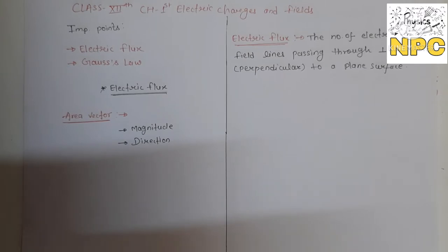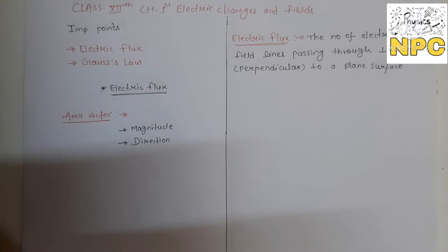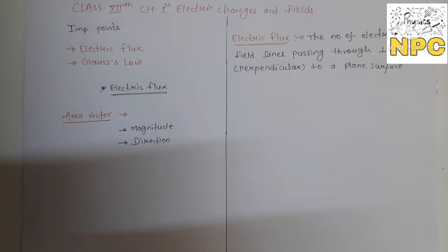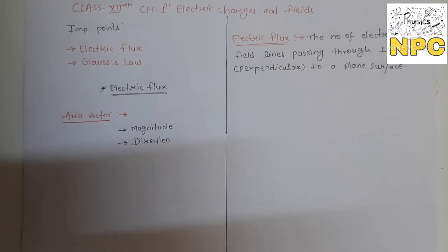With Coulomb's Law we have found out the electric field for different cases like point charge, electric dipole, and system of charges. With Gauss Law we can also find out the electric field of a system of charges, but the system must have symmetry. Gauss Law has certain conditions, and the system must satisfy those conditions for Gauss Law to be applicable.